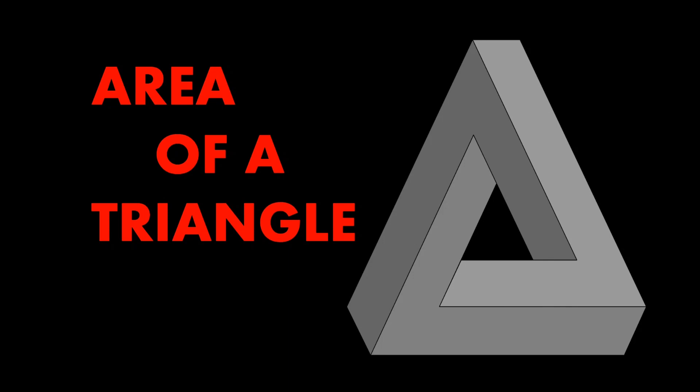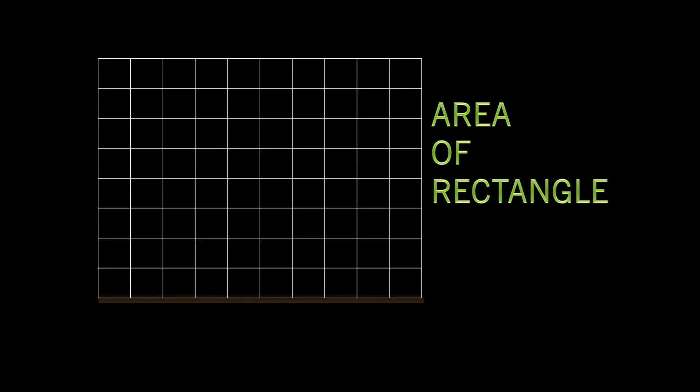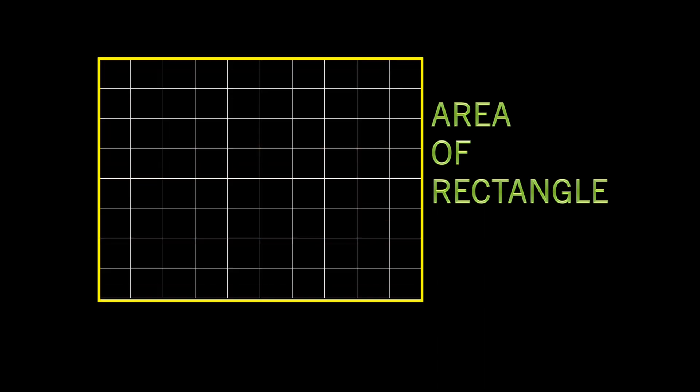Hello students, let's get the concept of area of a triangle. To get the area of a triangle, let's first recall the area of a rectangle. The area of a rectangle means how many square units a rectangular field is enclosing, or how many square units are there inside the rectangle.